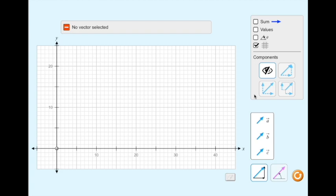To begin, select the A vector and drag it onto the screen so the vector's tail is on the graph's origin.